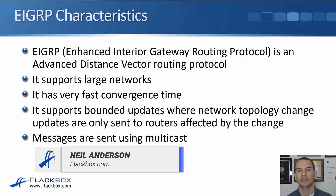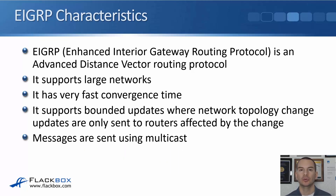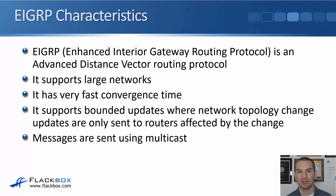In this lecture, you'll learn about the characteristics of EIGRP and we'll do a basic configuration as well. EIGRP stands for the Enhanced Interior Gateway Routing Protocol. Its predecessor was IGRP, but that's a really old legacy protocol that's not used anymore. EIGRP supports large networks and has very fast convergence time, way quicker than RIP. It supports bounded updates where network topology change updates are only sent to routers affected by the change, so it's more efficient.